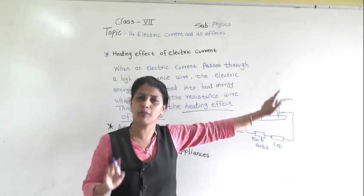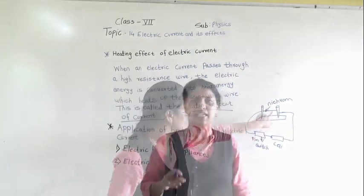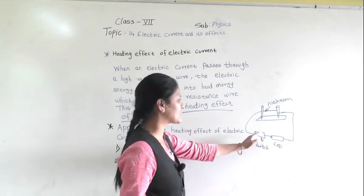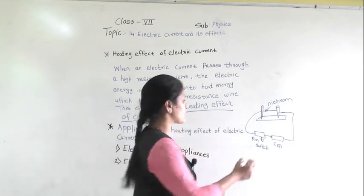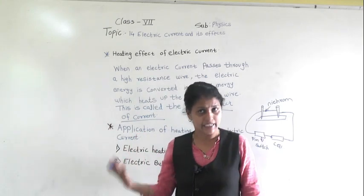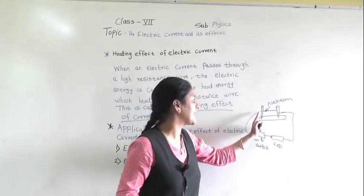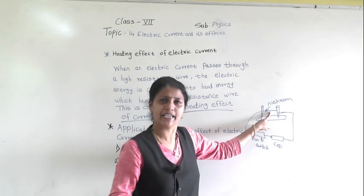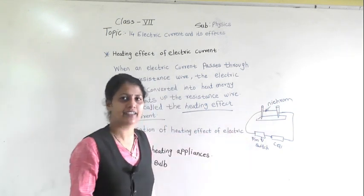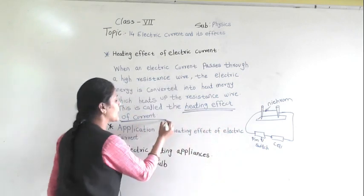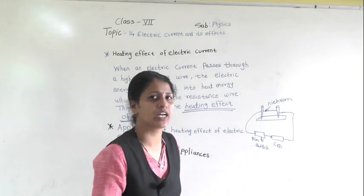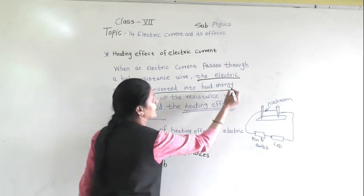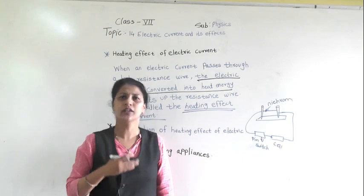What is nichrome? It consists of iron, nickel, chromium, and magnesium. As the current passes through this circuit, the nichrome wire will get heated, because the electric energy passing through it is converted into heat energy. This effect is called the heating effect of the current.